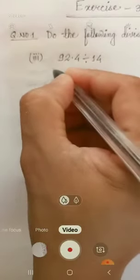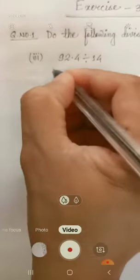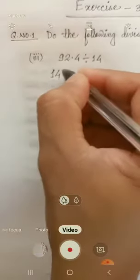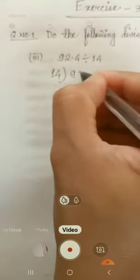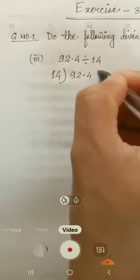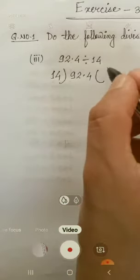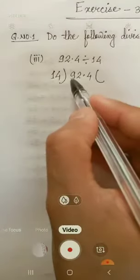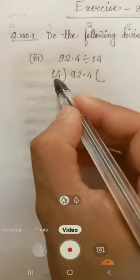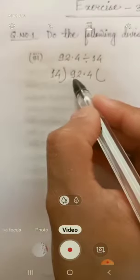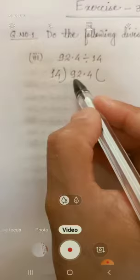You should write here 14 outside the bracket and 92.4 inside the bracket. Now see here, 9, we cannot divide 9 by 14 because 9 is a smaller number than 14, isn't it? So we have to take two numbers here, 92.